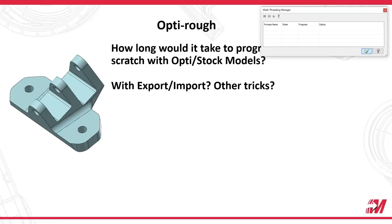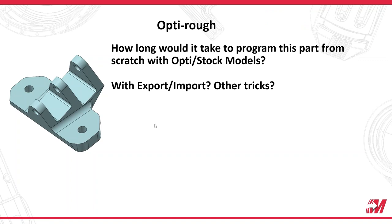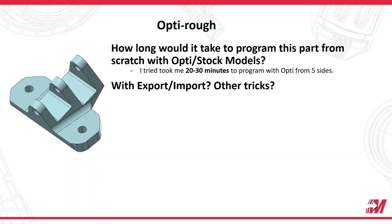So we just programmed this new part with 3 Plus 2 Automatic using import/export. How long would it take to program that part from scratch with OptiRough and stock models? I tried it three different ways and it was taking me 20 to 30 minutes no matter what I did to get a good OptiRough toolpath. That's significantly more than what it just took with import/export. But why not use export/import on OptiRough — wouldn't that make it just as fast?